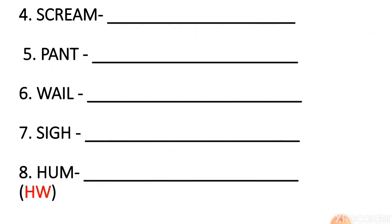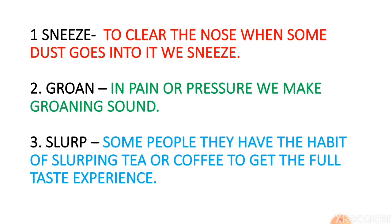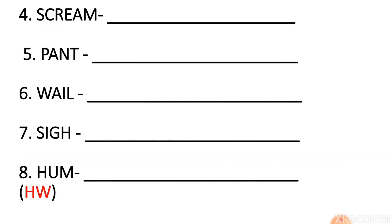Next is scream, then pant, well, sigh and hmm. These five — scream, pant, well, sigh and hmm — are homework for you. You have to write when these sounds can be heard and write the answer. Three I have explained for you, and these five are homework for you.